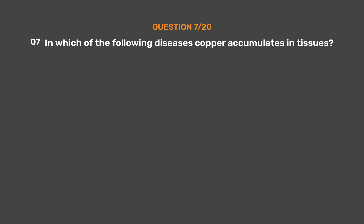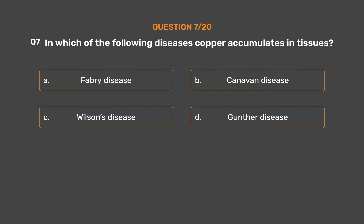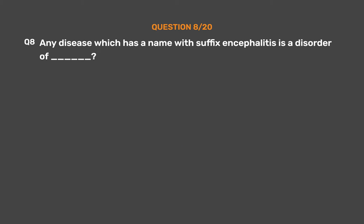Question number seven. In which of the following diseases does copper accumulate in tissues? Option A: Fabry disease. Option B: Canavan disease. Option C: Wilson's disease. Option D: Gunther disease. The correct answer is Option C: Wilson's disease.